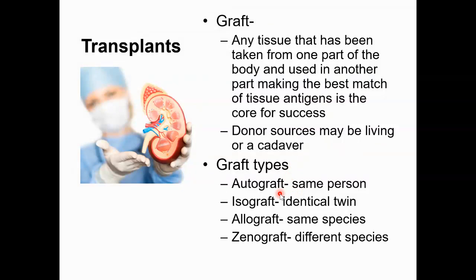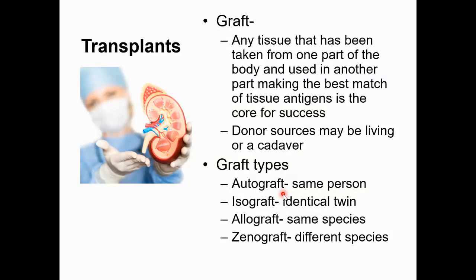Graft types: an autograft comes from the same person — like autologous blood, where someone donates their own blood prior to surgery. An isograft is from an identical twin. An allograft is from the same species, which is the most common — typically human to human. A xenograft comes from a different species, like a pig valve, cow valve, or baboon heart.